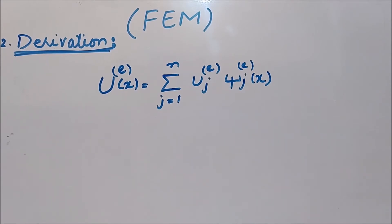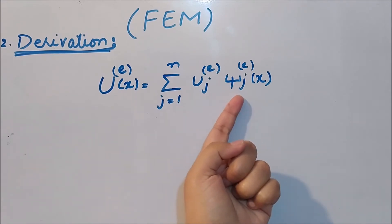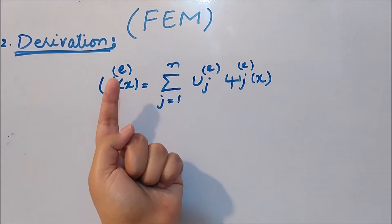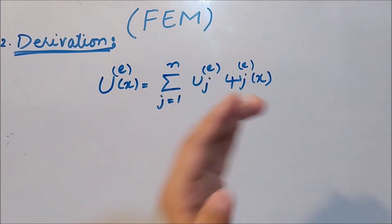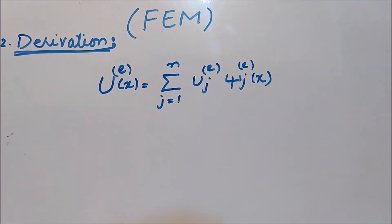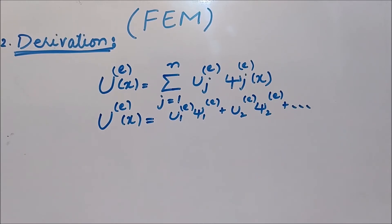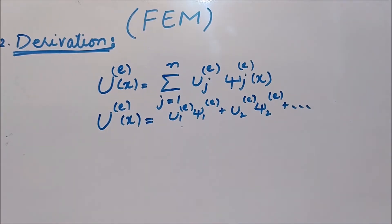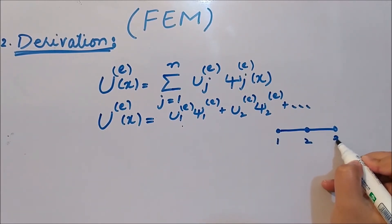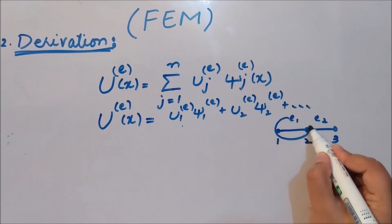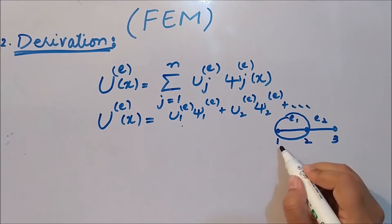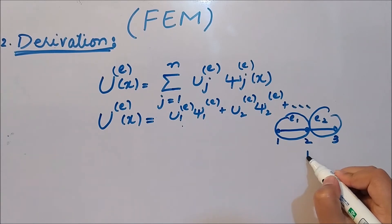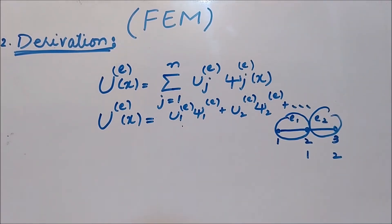We know the approximated function used in the finite element method is of the form u = Σ u_j · ψ_j, where the superscript e denotes the element-level equation. Expanding this, we need to specify how many nodes to take. The subscripts u_1, u_2 and ψ_1, ψ_2 represent local node numbers in element e. For example, with nodes 1, 2, 3 globally, element 1 has local nodes 1 and 2, and element 2 has local nodes 1 and 2 as well.